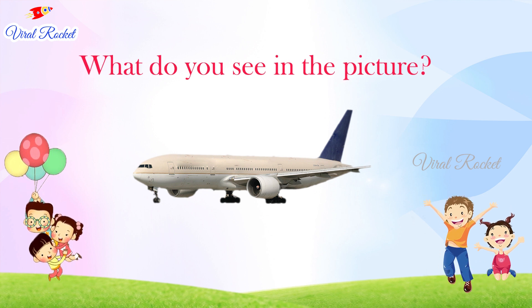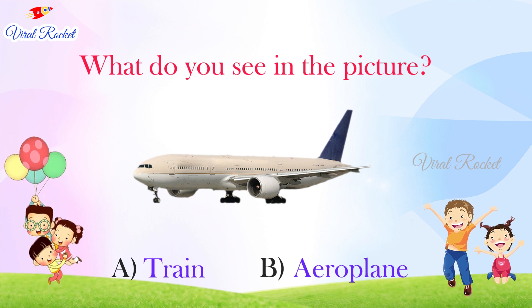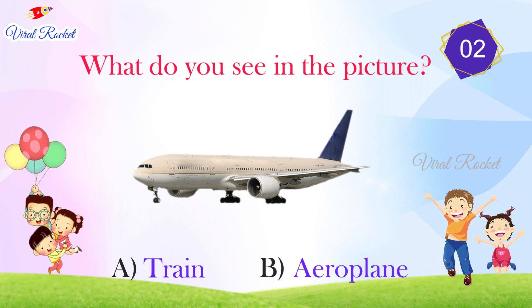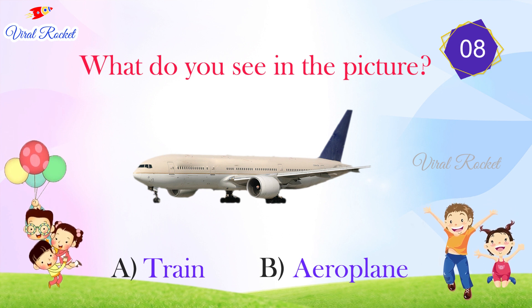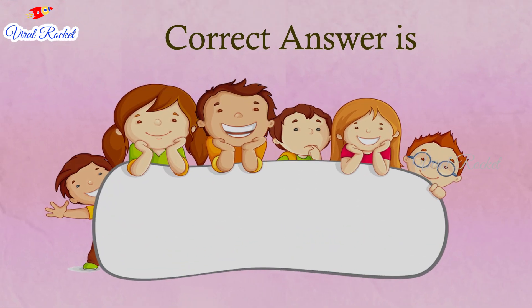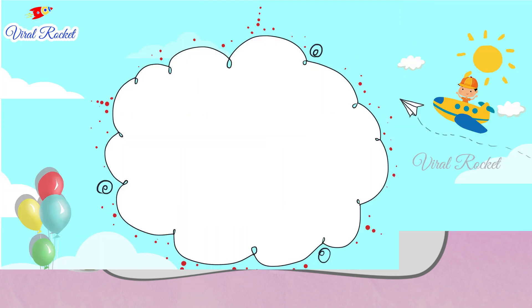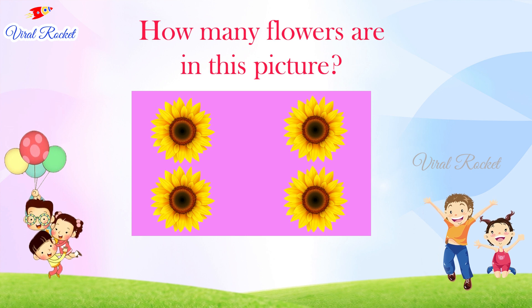What do you see in the picture? The options are: A. Train, B. Airplane. The correct answer is B. Airplane.